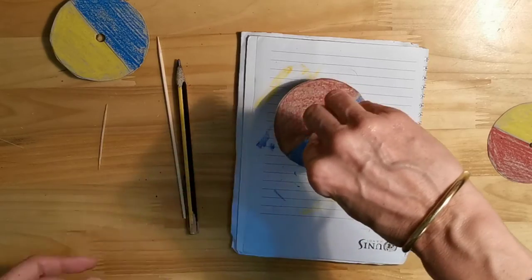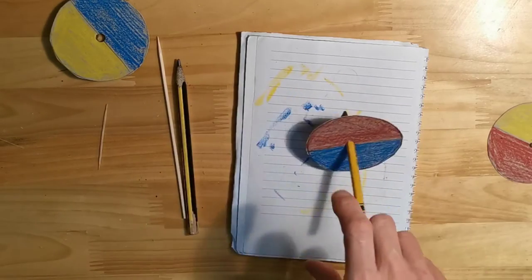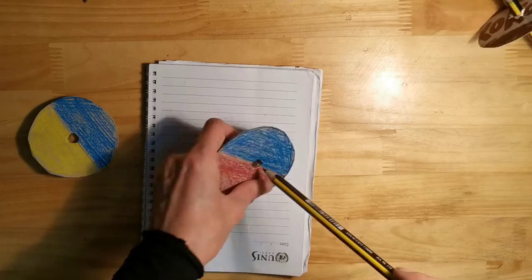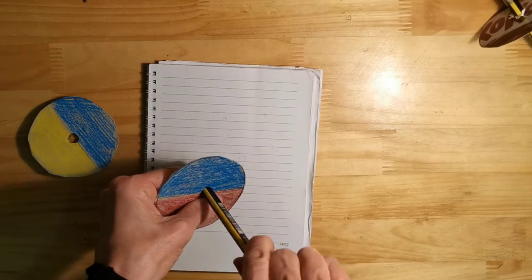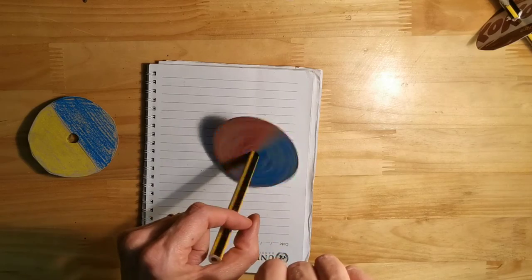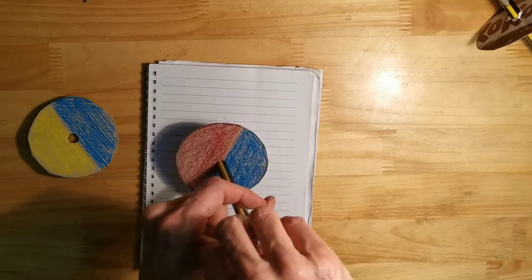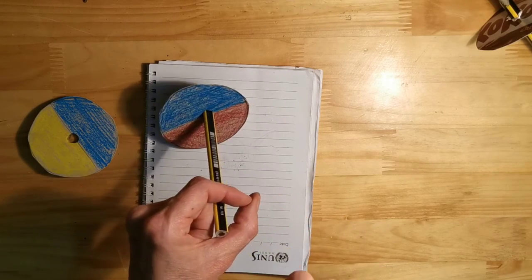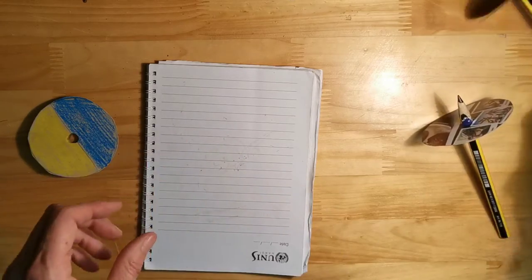When you've got your pencil in there, you are going to spin it. Now this bit's a bit tricky, but I'm hoping you can see when you spin it the colours mix together. Another way to do it is you can see I've put my hand around the top to make a circle. I'm going to spin it inside and hopefully you can see that when you mix blue and red it makes purple.